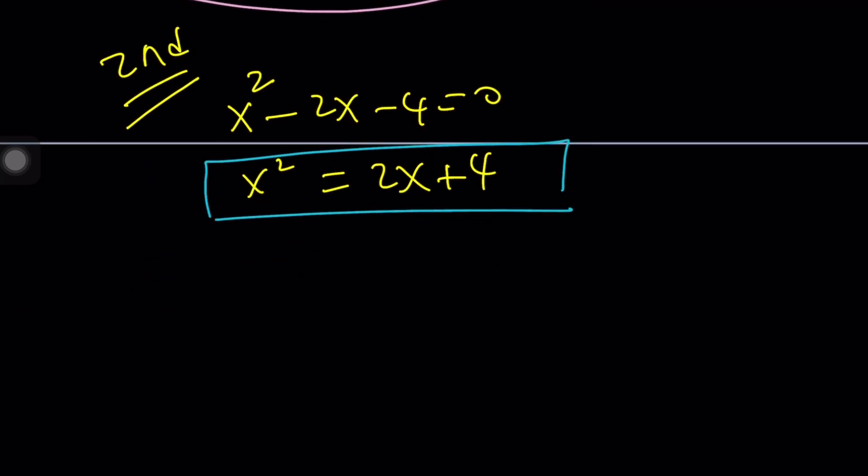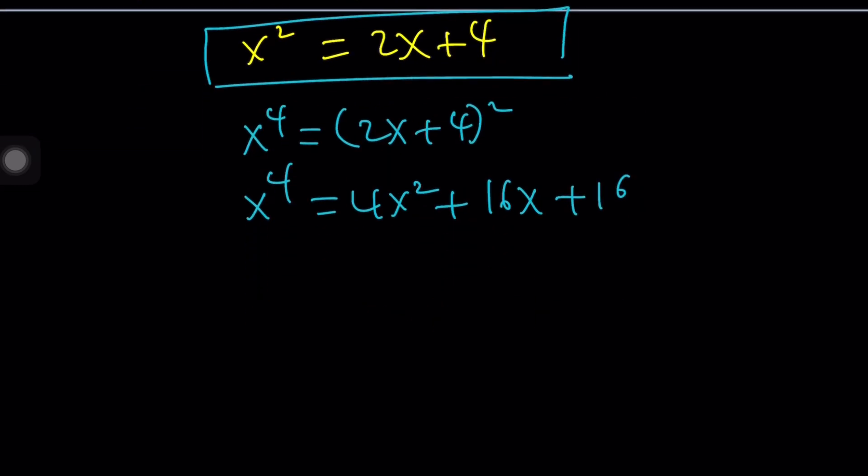So let's go ahead and square both sides. We get x to the fourth equals this expression squared. And that is 4x squared plus 16x plus 16. And now, we do need the fifth power. So let's go ahead and find fifth power by multiplying both sides by x. That's going to give us 4x cubed plus 16x.